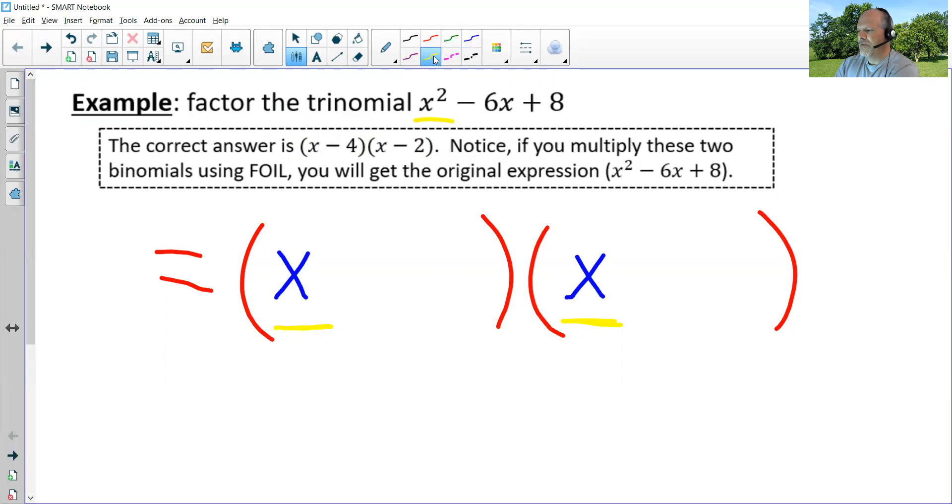But our next step is to find a last times last, the L in FOIL, that equals positive eight. Now of course we have some options here because I could multiply one times eight, I could multiply two times four, I could also reverse both of those, eight times one, four times two, doesn't really make a difference in this case. However, I have to pick the right factors because I can't forget about the inside times the inside and the outside times outside.